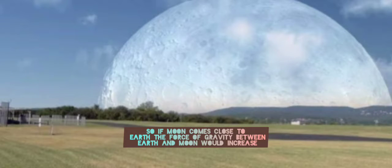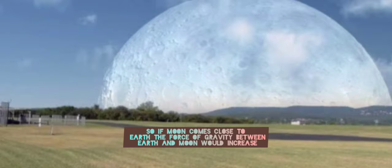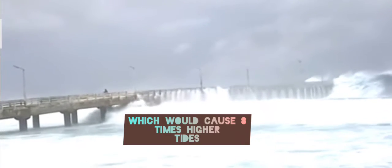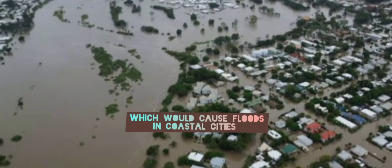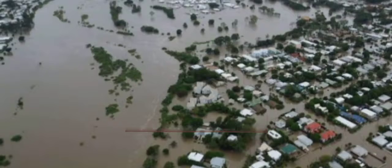So if the Moon comes close to Earth, the force of gravity between Earth and Moon would increase, which would cause eight times higher tides, which would cause floods in coastal cities or may even sink them completely.